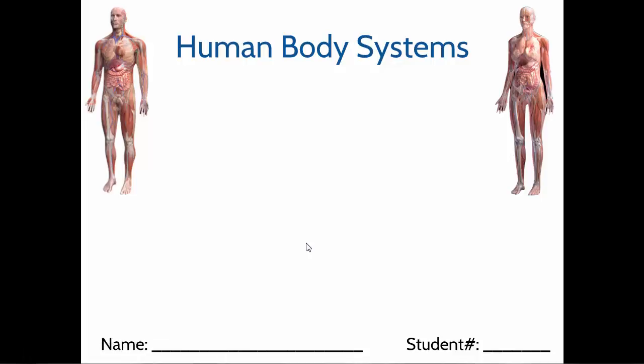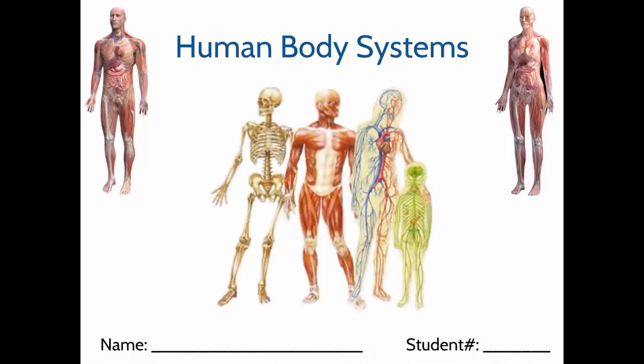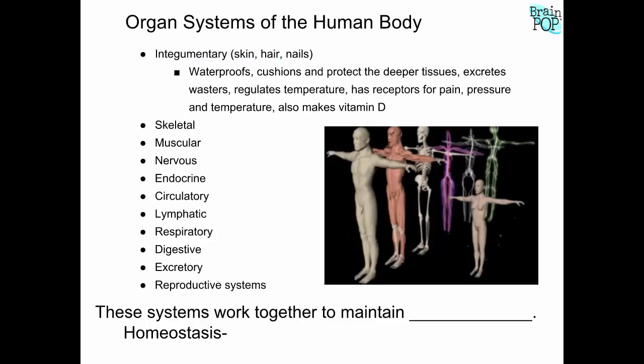In this unit we take it in chunks — one, two, sometimes three body systems at a time. We follow the same pattern: we talk about the function of that body system, what it does, what some of the organs are, and we talk about some of the possible diseases, problems, or disorders that might affect that body system. We cover most of them.